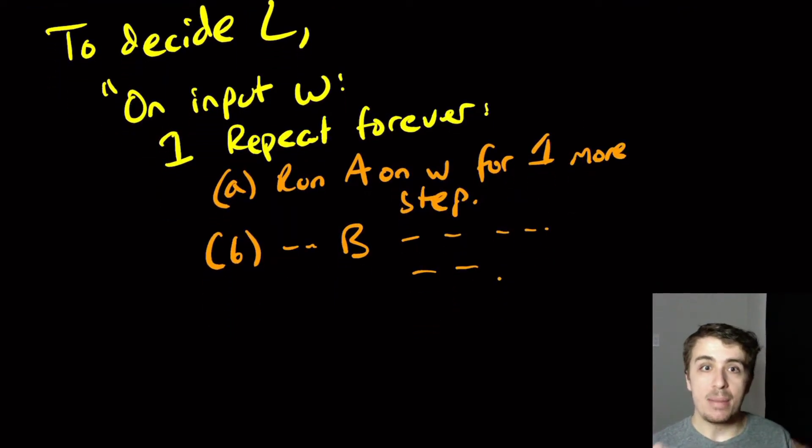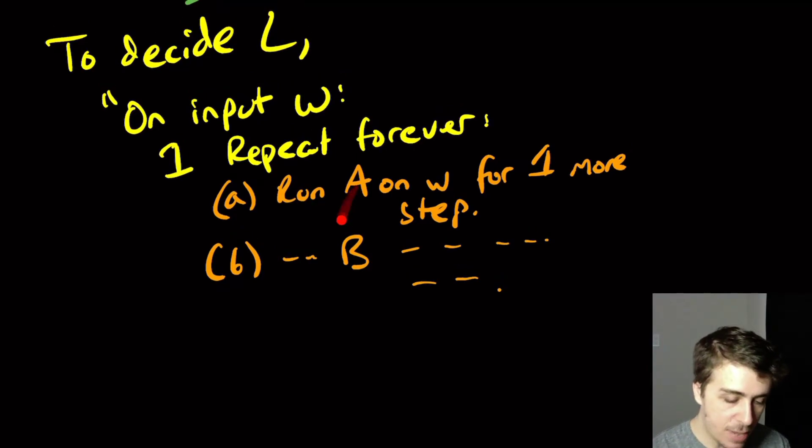It might be that one of these two says something on this input. I don't know necessarily. It may be that neither of them has said anything at this point. And if neither of them have said accept or reject at this point, we're just going to run for another step and just keep going. We're guaranteed that at least one of the machines will stop eventually.